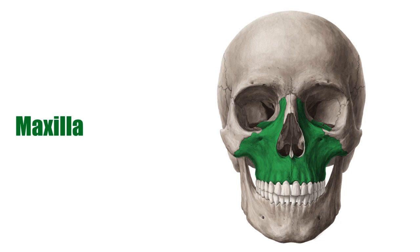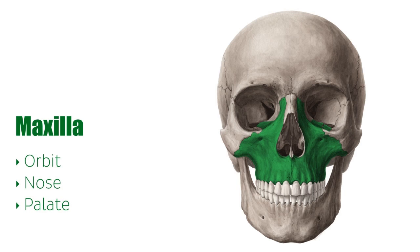The maxilla makes up the largest portion of the face and has the many muscles of facial expression attached to it. It is also known as the upper jaw and is involved in the formation of the orbit, nose, and palate. The maxilla houses the upper teeth and plays an important role in mastication.